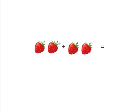We are going to count how many pictures we see on the left side of the plus sign, and then how many pictures we see on the right side of the plus sign. So let's count these strawberries. One and two strawberries.